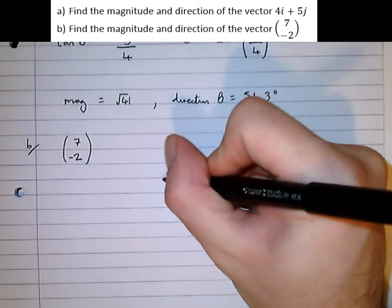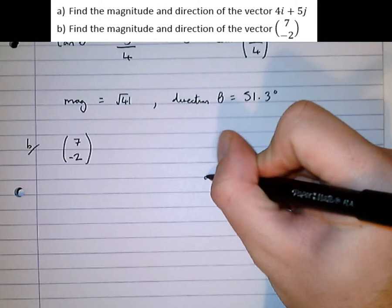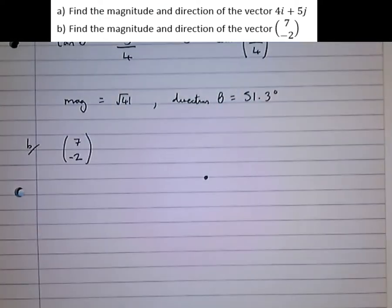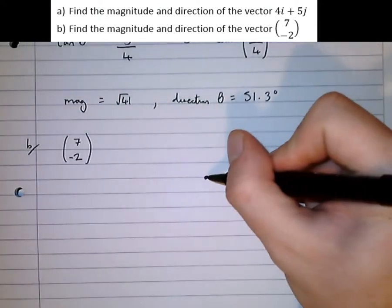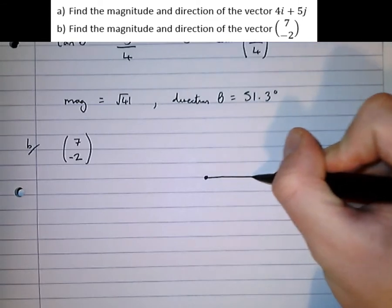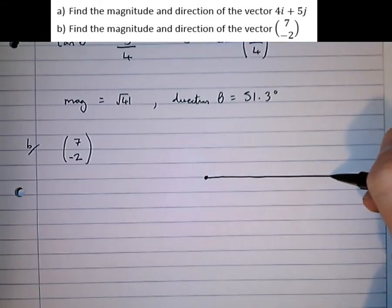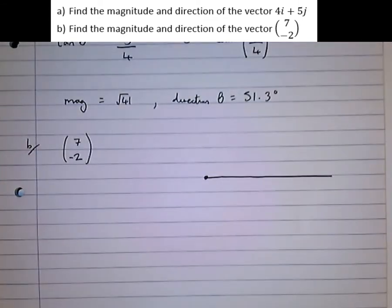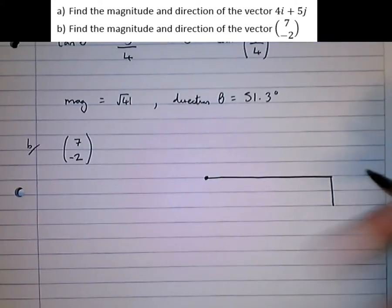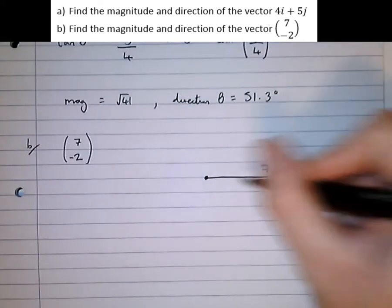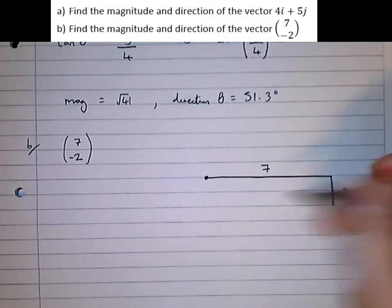As before, take our origin point, and we move 7 steps in the i direction, and minus 2 in the j direction. It's important that you're trying to make the diagram as accurate as possible. So 7 in that direction, and 2 in that direction.